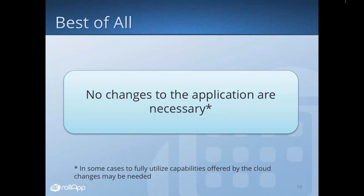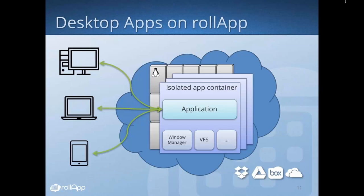We currently have more than 230 applications publicly available on our website as part of our consumer package — and we add new applications very often. By all means, go to rollapp.com and try some apps for yourself. When you try them, you might wonder how it all works. The next slide shows a high-level overview.